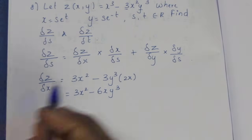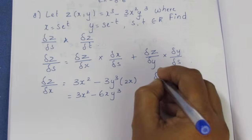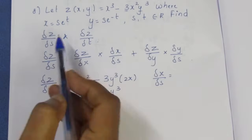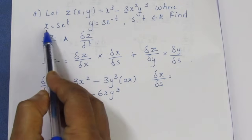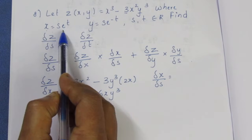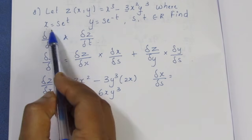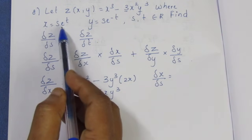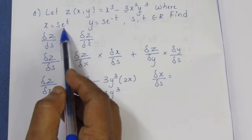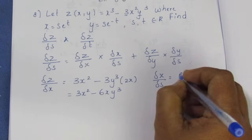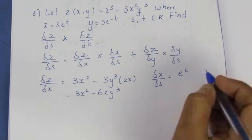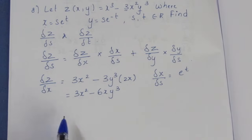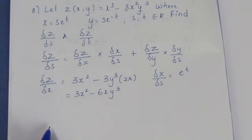Now we find ∂x/∂s. We differentiate x = se^t with respect to s. Since e^t is treated as a constant, ∂x/∂s = e^t.